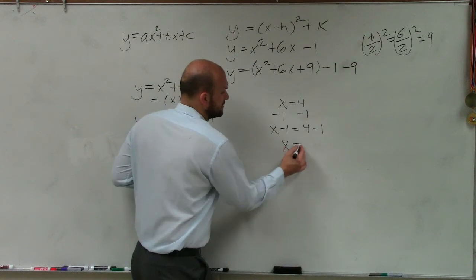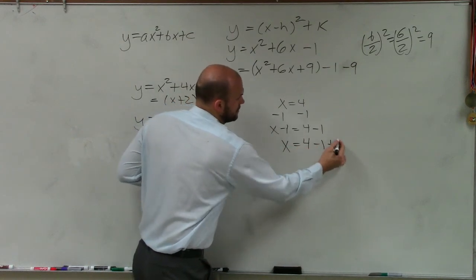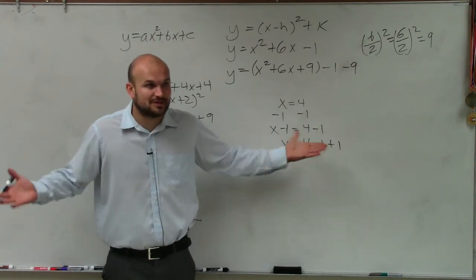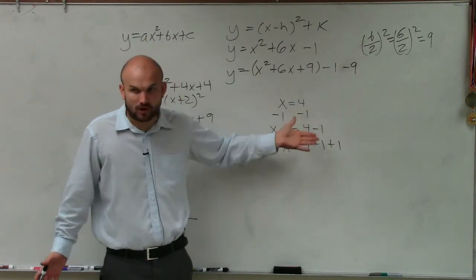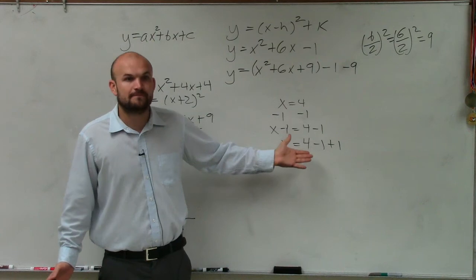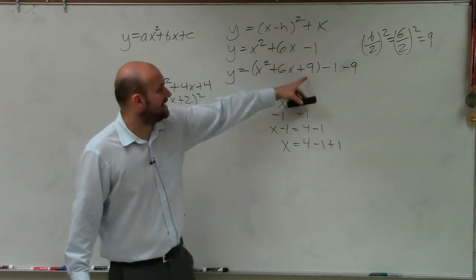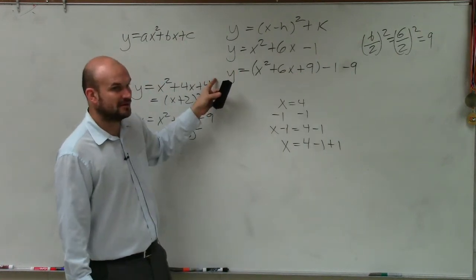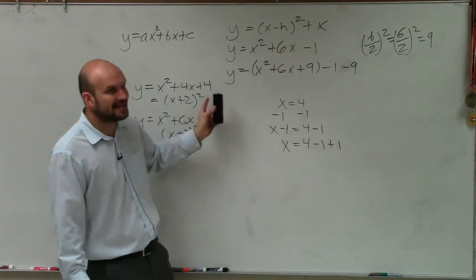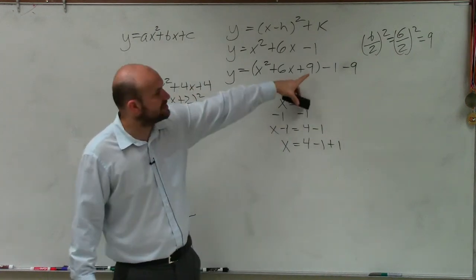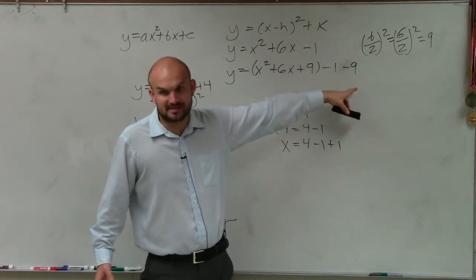But could I also do this? Could I also subtract a 1 and add a 1? Does that change the problem at all? Is x still 4 in all these examples? Yes. So what I'm doing in this case, instead of adding a 9 to both sides, because I want y by itself. So if I added a 9, I'd have to subtract it on the other side anyways to get y by itself. So I can just add a 9 and subtract a 9 on the same side.